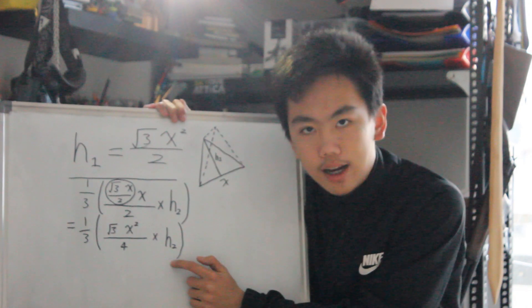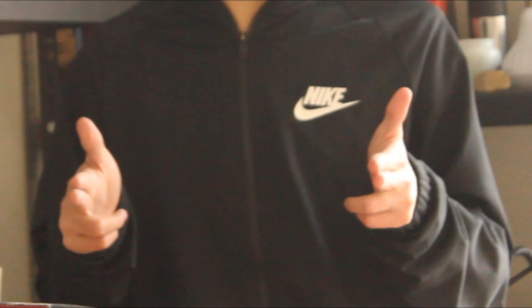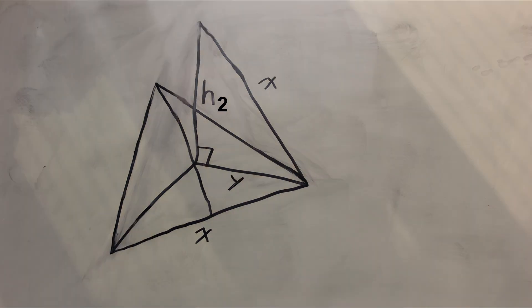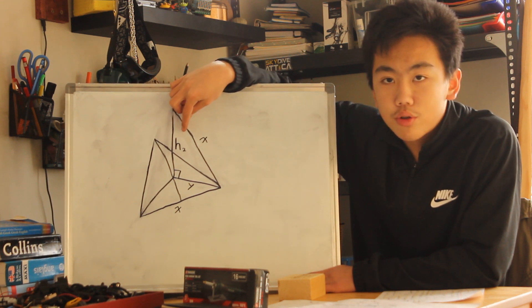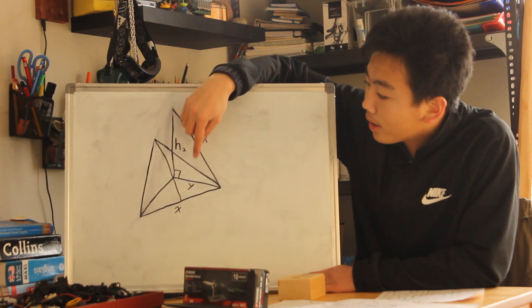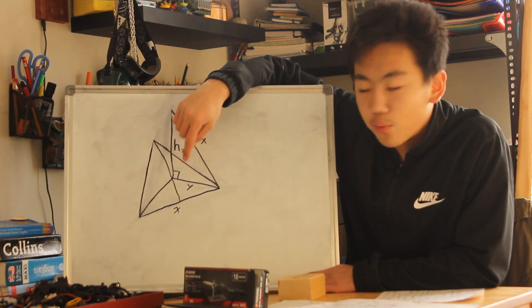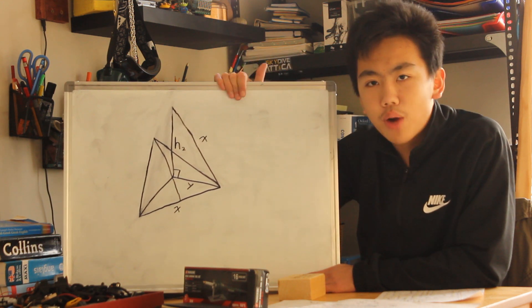For substitution of the second height, if we look at it from another perspective, we can see another right angle triangle inside the tetrahedron. We've got another unknown side and we name it y since it's a right angle triangle.